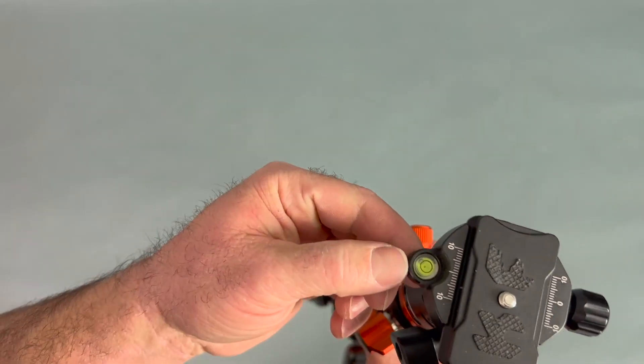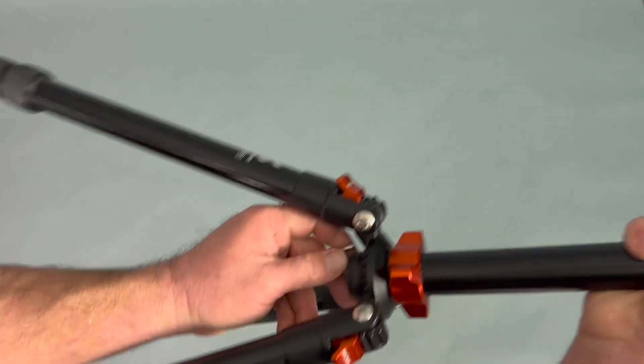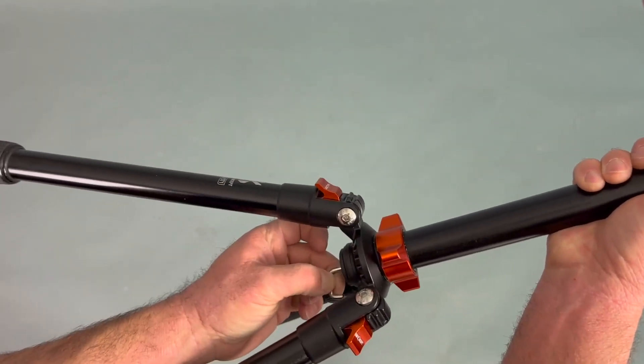A level is always nice if you're really trying to make sure you've got good level footing for your tripod. You also get a counterweight hook here so you can hook a sandbag onto this and counterweight it, which is especially nice depending on some of the weird angles you might have this on.